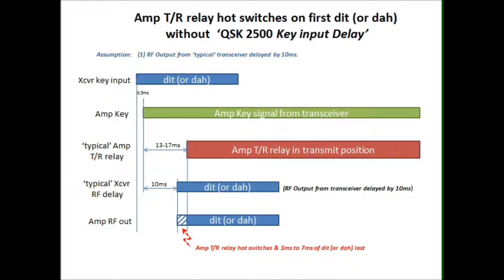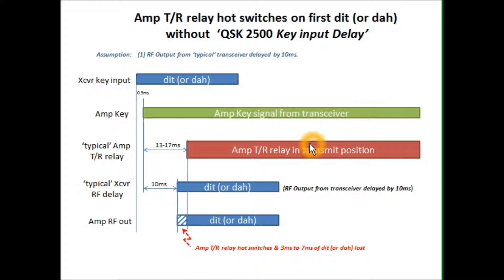Today I'm going to talk about the input to your transceiver, which is your key or paddle input — let's call it the key input — and we're going to relate to that the amplifier key output, which is the key signal from the transceiver. That normally occurs about a half millisecond after you key the transmitter, and then the amplifier TR relay is ready for transmit operation about 13 to 17 milliseconds after that time.